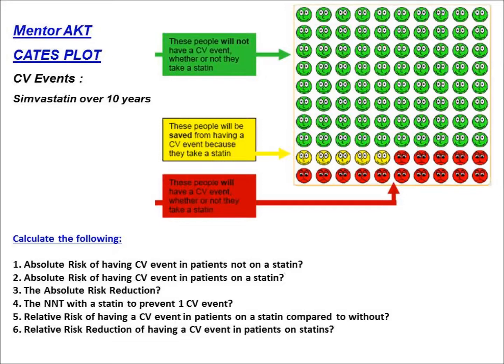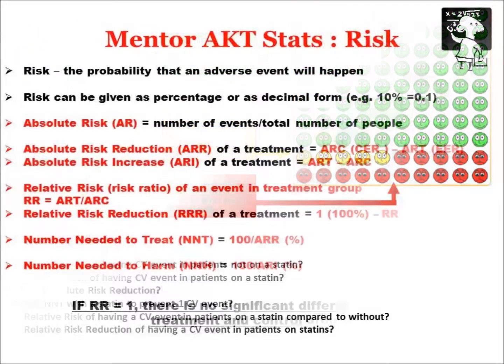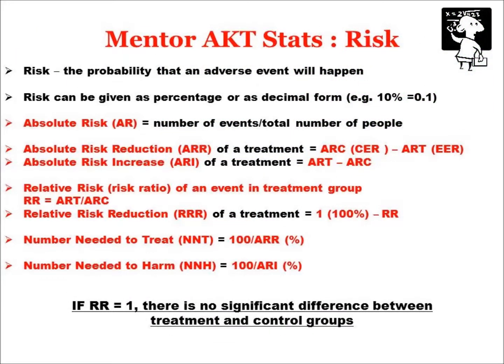To understand how to extrapolate risk from a Cates plot, you firstly need to understand risk. This first slide looks at the equations around risk. Remember that in the AKT you've got a scratch pad, so it would be very strategic to write down all of these equations on that scratch pad. Risk is the probability that something bad is going to happen — it's about adverse events. It can only be calculated if you're moving forward, so it's a prospective measure.